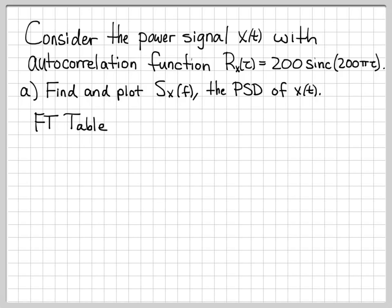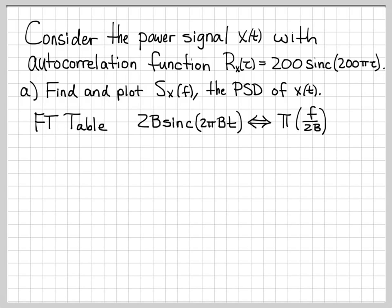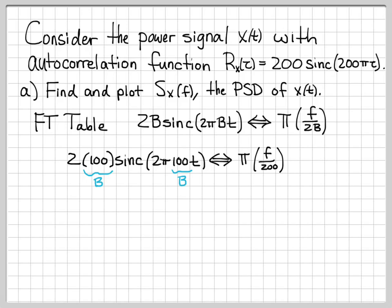That's not too bad because we know that the power spectral density Sx(f) and the autocorrelation function rx(τ) are just Fourier transform pairs. So if we go to our Fourier transform table, we can find a pair that looks like this: 2b sinc(2πbt) in the time domain has a frequency domain representation of a rectangle function centered at frequency 0 with a total width of 2b. That's exactly the form we have here. Our autocorrelation function can be written as 2 times 100 sinc(2π·100t), so capital B is 100, which means in the frequency domain we are dealing with a rectangle function centered at 0 with a total width of 200.